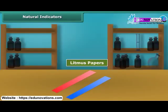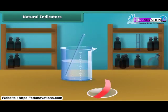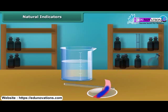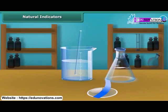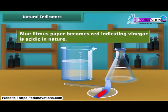Litmus is a natural indicator extracted from lichens. It has a purple color in distilled water and is available as a solution or as litmus papers. Dip a clean stirring rod into a baking powder solution and touch the wet rod to red litmus paper — it turns blue, indicating the baking powder solution is alkaline. Dip a clean stirrer into vinegar and place one drop on blue litmus paper — it turns red, indicating vinegar is acidic in nature.